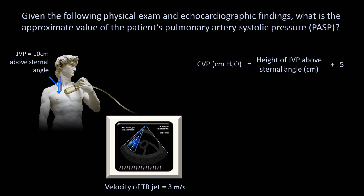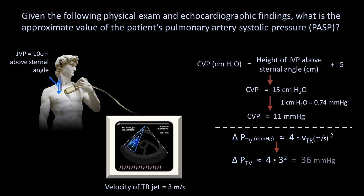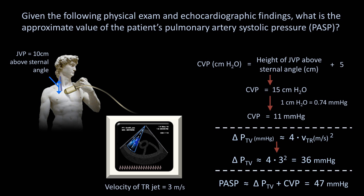Step 1: the central venous pressure (CVP) in centimeters of water equals the height of the JVP above the sternal angle plus 5, so CVP is 15 cm H₂O. Since 1 cm H₂O equals 0.74 mmHg, CVP is 11 mmHg. Next, using the simplified Bernoulli equation, the pressure gradient across the tricuspid valve equals 4 times the velocity squared: 4 × 3² = 36 mmHg. In the absence of pulmonic valve stenosis, the pulmonary artery systolic pressure equals the tricuspid pressure gradient plus CVP, which is 47 mmHg.